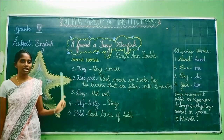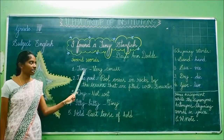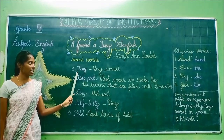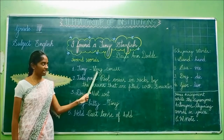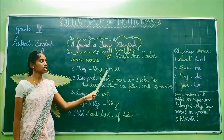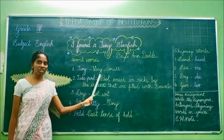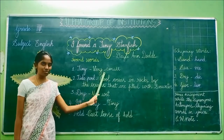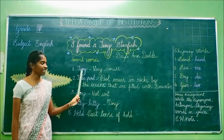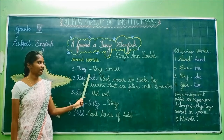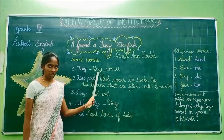Now we are going to see the vocabulary. The first word is tiny, T-I-N-Y. What is the spelling? T-I-N-Y, tiny. And the meaning of the word tiny is very small, V-E-R-Y S-M-A-L-L.